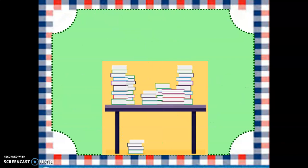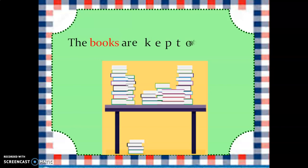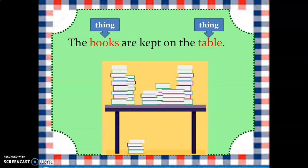Now look at this picture. What can you see in this picture? There are so many books and they are on a table. Can we frame a sentence for this picture? We can frame a sentence like: 'The books are kept on the table.' There are two nouns in this sentence — one is books and the other is table. Both of these are things.